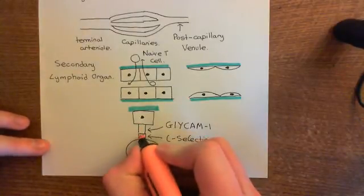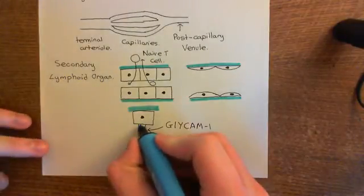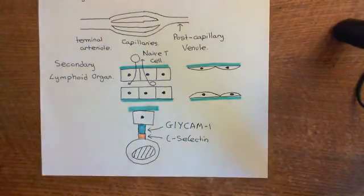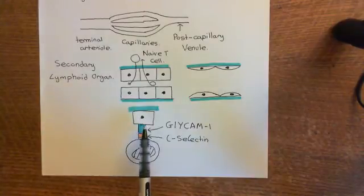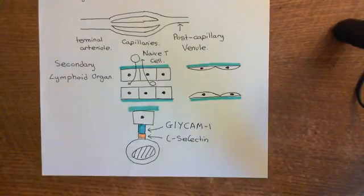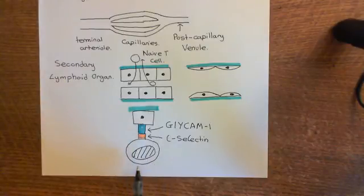L-selectin is going to bind to the Glycam-1 on the high endothelial cell here, which I'll color in blue. This is going to tether the naive T-lymphocyte, which was in the blood, to this high endothelial venule cell, and it will then be moved across the endothelium via diapedesis into the cortex or the paracortex of the lymph node. L-selectin is involved in the movement of naive T-lymphocytes from the blood back into a lymph node.